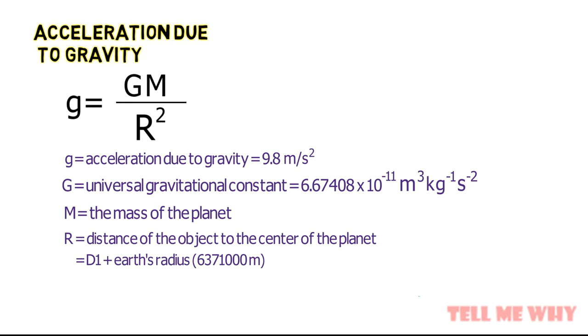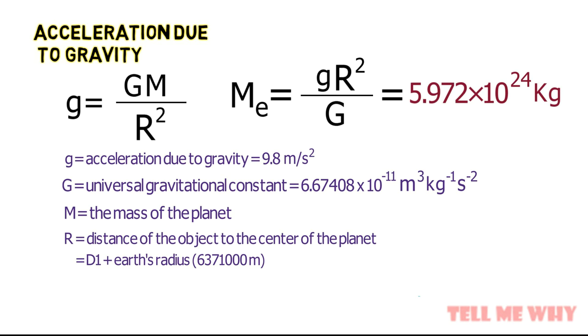So the equation becomes this. Substituting these values, we get mass of the Earth as 5.972 times 10 to the power of 24 kilograms.